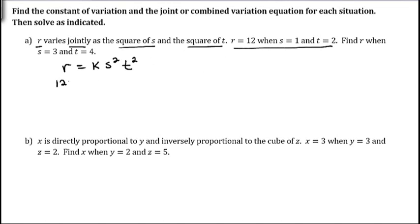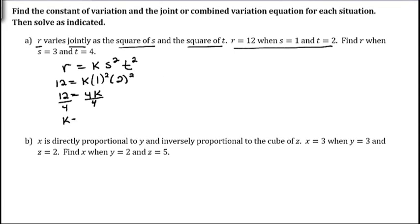R is 12, so we have 12 equals K times 1 squared times 2 squared. We have 1 squared is just 1, and 2 squared is 4, so that's 4K. Divide by 4 gives us K equals 3. So R equals 3 S squared T squared.